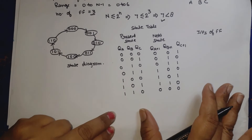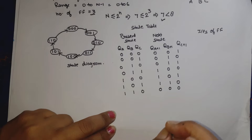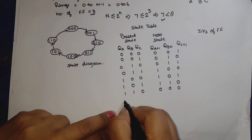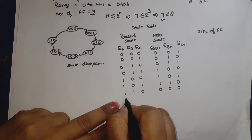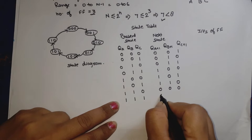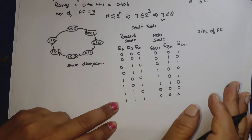The state 111 is unused. Because we have three variables, there are 8 combinations total, so the unused state is 111 and we give it as a don't care.